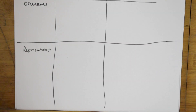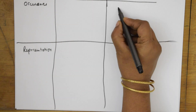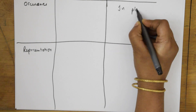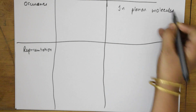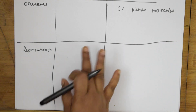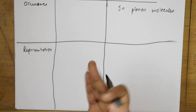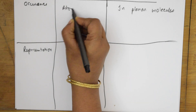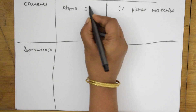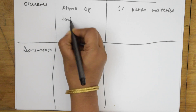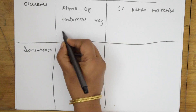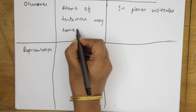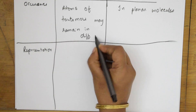The sixth criteria is occurrence. Resonance occurs in planar molecules. However, atoms of tautomers may remain in different planes — they are not restricted to planarity.